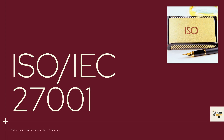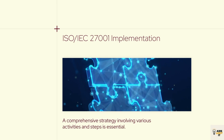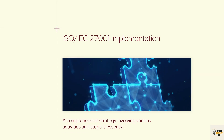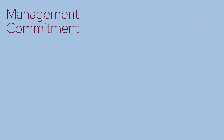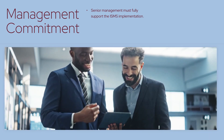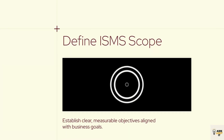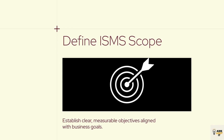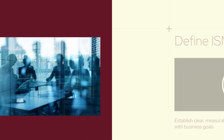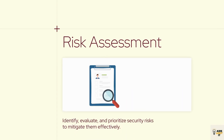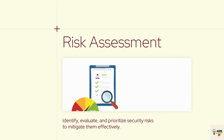ISO IEC 27001 Implementation Process. The implementation of ISO IEC 27001 requires a holistic approach involving a wide range of activities and steps. First, initial planning and commitment: secure management commitment, as senior management must fully support the implementation of the ISMS. Define the scope and objectives, establishing clear measurable objectives aligned with business goals. Then conduct a thorough risk assessment to identify, evaluate, and prioritize information security risks, followed by a risk treatment process to mitigate those risks using appropriate security controls.